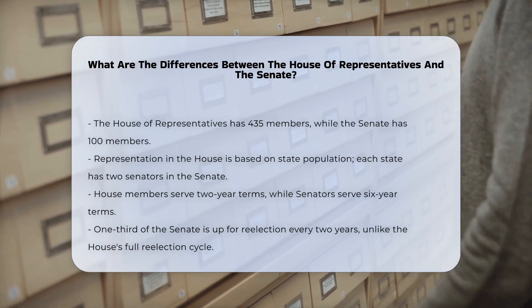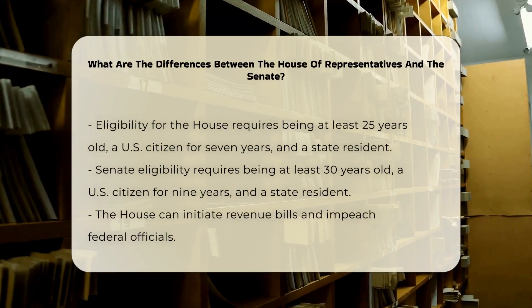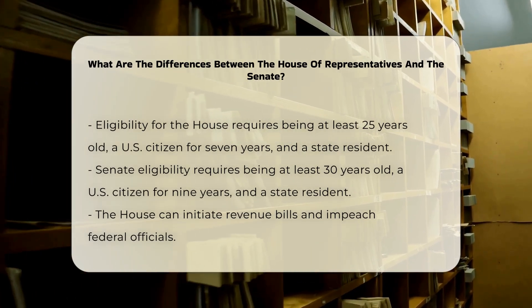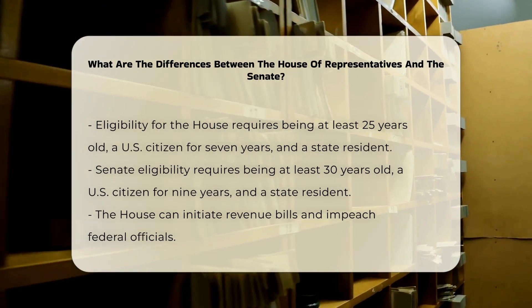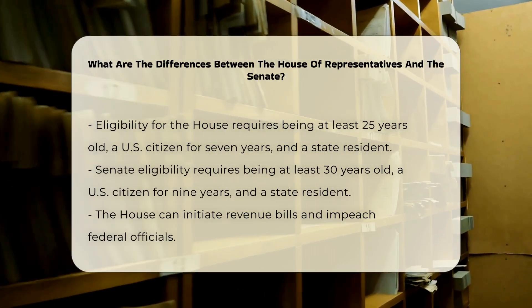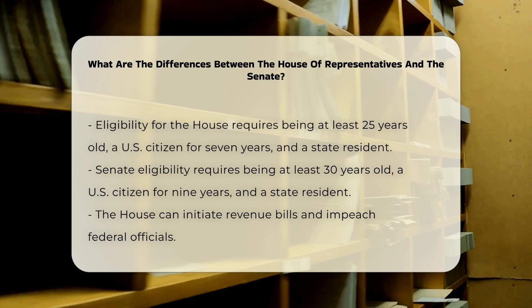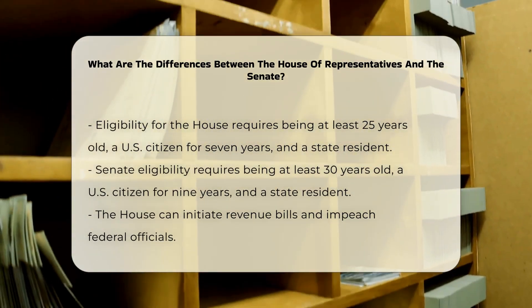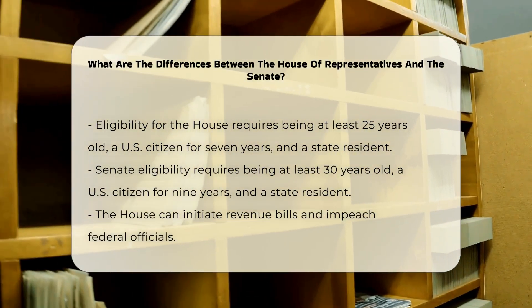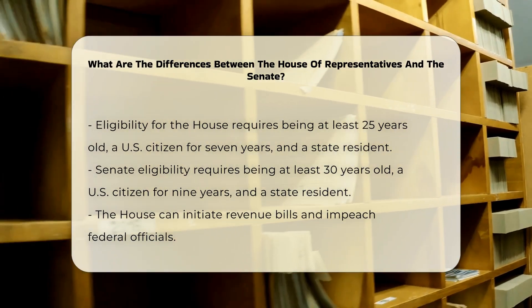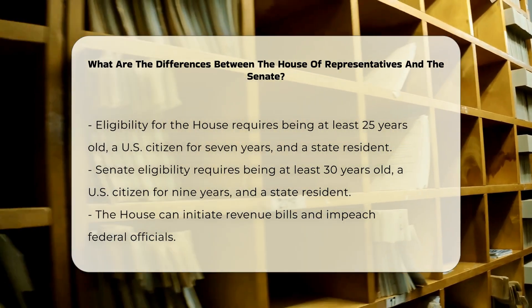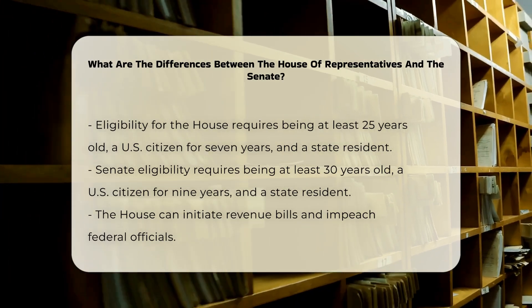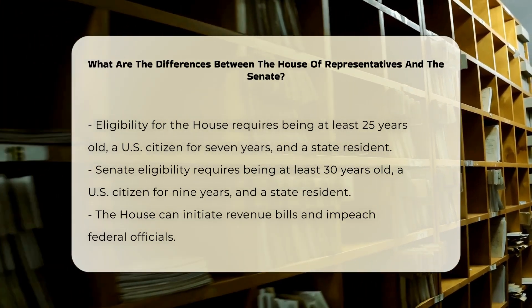Qualifications for office. To be eligible for the House of Representatives, one must be at least 25 years old, a U.S. citizen for at least 7 years, and a resident of the state they represent. For the Senate, the requirements are 30 years of age, a U.S. citizen for at least 9 years, and a resident of the state they represent.